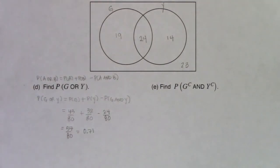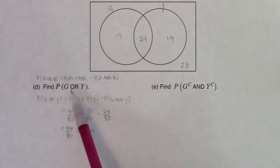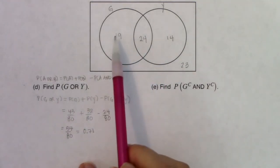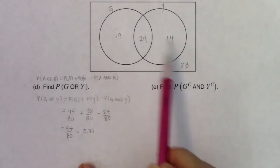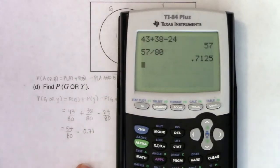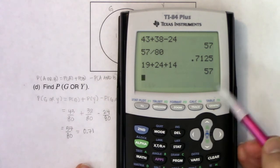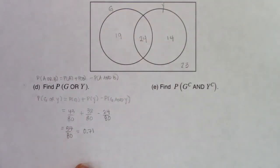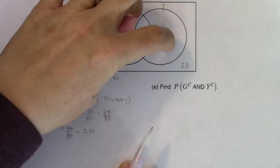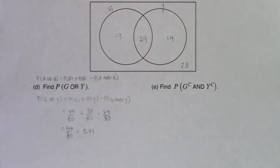Because I also have a Venn diagram, here's a cool shortcut for 'or' problems: the 'or' is always left moon plus football plus right moon — that's your numerator. Adding those three numbers: 19 plus 24 plus 14 equals 57. So the probability is 57 divided by 80, which matches. With an 'or' on a Venn, you just add those three regions and divide by the total.